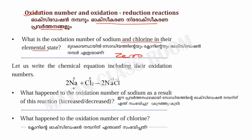If we have a chemical equation including ions or oxidation numbers, we have sodium with oxidation number zero and chlorine with oxidation number zero. So, what happened to the oxidation number of sodium as a result of this reaction?